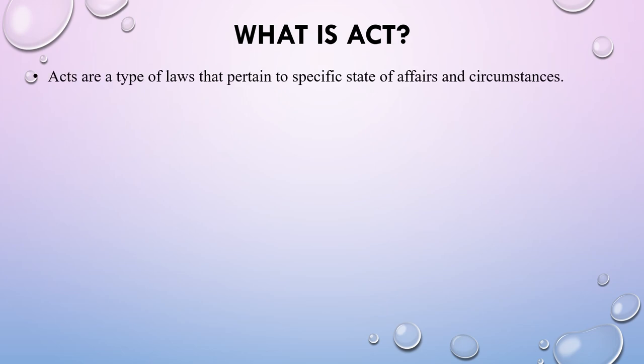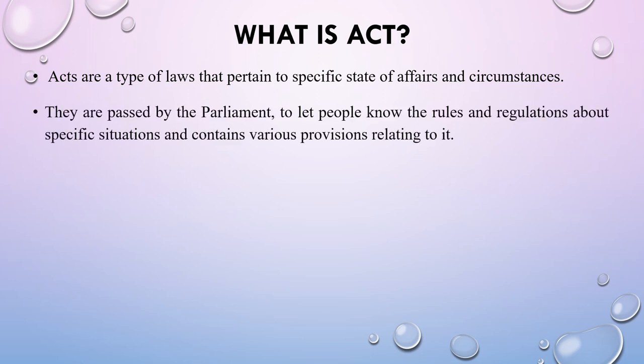The next topic is: what is an act? Acts are a type of laws that pertain to specific states of affairs and circumstances. They are passed by the parliament to let people know the rules and regulations about specific situations, and contain various provisions relating to it. To make it simpler, let's understand the difference between law and act. If we talk about criminal law, it includes three acts: the first is IPC, CRPC, and the Evidence Act.